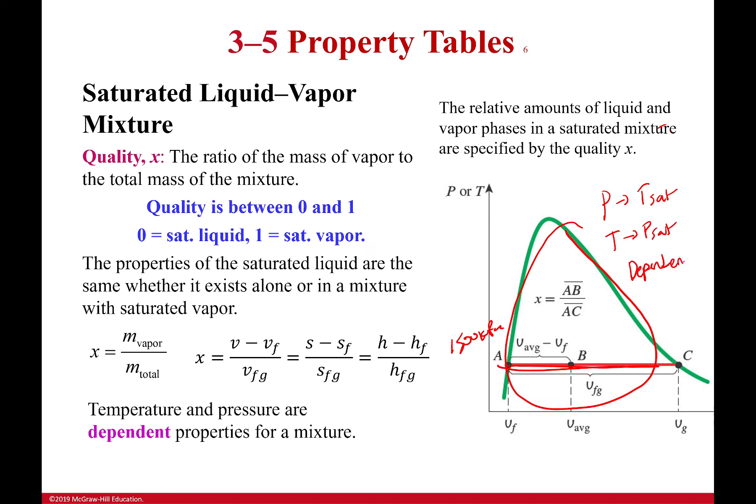If they are dependent, I cannot use them to figure out where I am. At least I can't use both of them to figure out where I am. I need two. They don't count as two, they count as one. So I need a second property. And so that can be your specific volume, it can be your entropy, it can be your enthalpy, it can be your internal energy. There's a lot of things you can use.